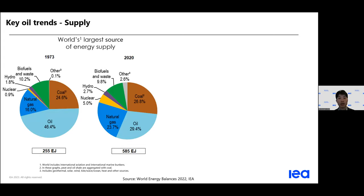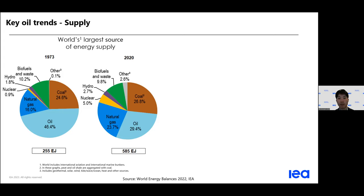Here we are looking at two pie charts showing the source of energy supply between 1973 and 2020. Even if its share has been decreasing since 1973, we see on the right pie chart that in 2020, oil remains the largest source of energy supply at around 29%, followed by coal and natural gas.